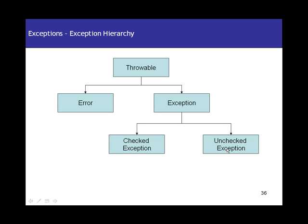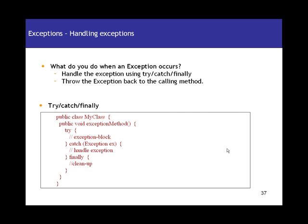That's about the exception hierarchy and the differences between all of those. Now let's see what to do when you have an exception in your code. The focus here will mainly be on checked exceptions, since you don't usually handle unchecked exceptions. There are two things you can do: the first is handle the exception using the try-catch-finally block. Whatever code that can throw an exception, you put that in the try block.